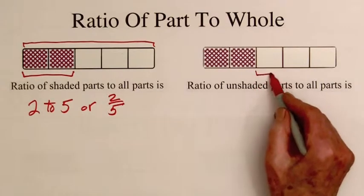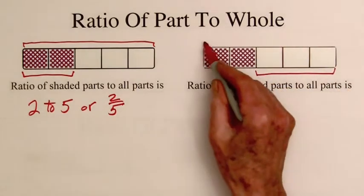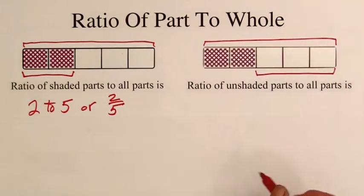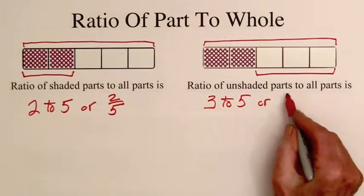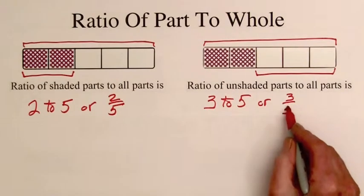The ratio of the number of unshaded parts to the total number of parts is 3 to 5, or the fraction 3 fifths.